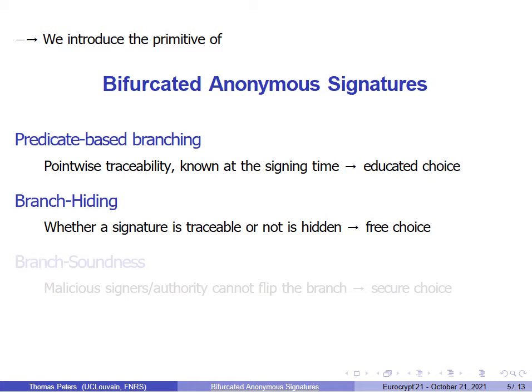From a privacy point of view, we require the bifurcated anonymous signature to be branch hiding. That means that whether a signature is traceable or not is hidden from the outside. This allows the signer to make a free choice, as no one can tell whether he or she accepts signing for one branch or the other — except the opening authority, of course, who can figure it out by trying to trace the signature.